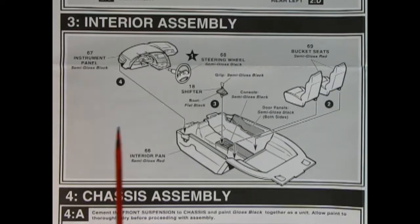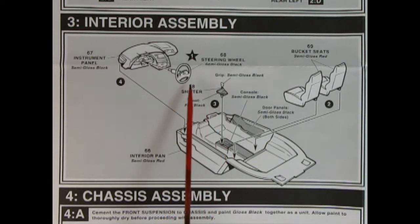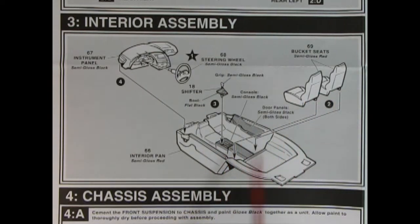Here we've got our interior assembly. And again, we've got our wonderful dashboard. Looks like a '96 version. We've got our steering wheel. We also have our grip for our gear shift lever and our bucket seat switch drop into this wonderful interior pan.